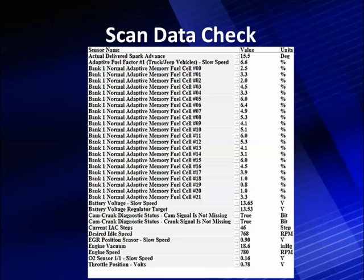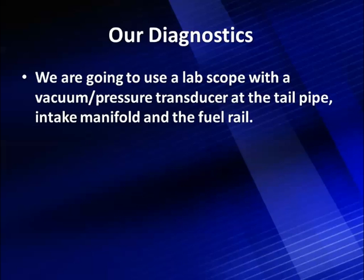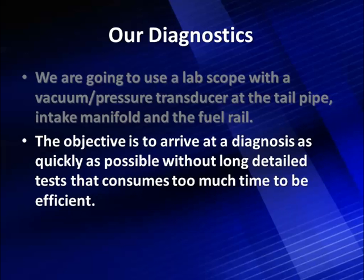This is where we plug into master level diagnostics — when you've tried your normal routines and they haven't been successful. We're going to use a lab scope with a vacuum pressure transducer at the tailpipe to measure pressure pulses as each cylinder goes through exhaust cycles, then at the intake manifold to look at vacuum pulses cylinder by cylinder, and finally into the fuel rail to watch pressure drop at the injectors. The objective is to arrive at a diagnosis quickly — this is a 5 to 10 minute diagnostic.